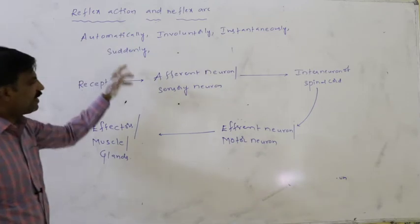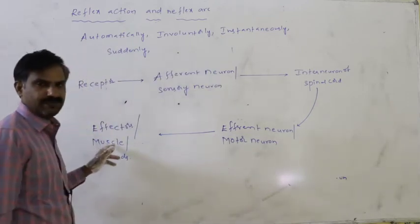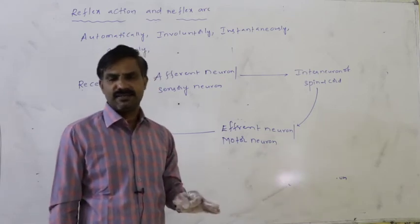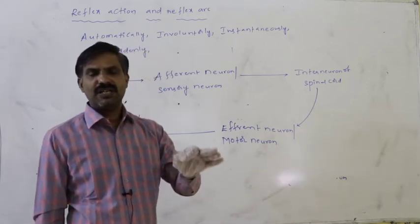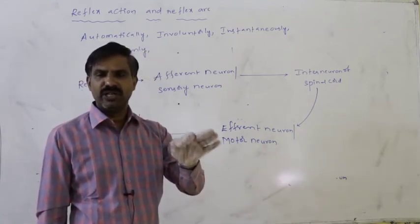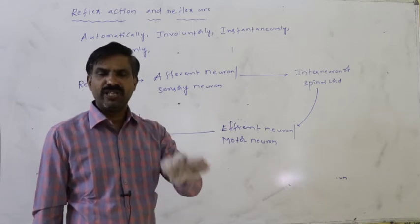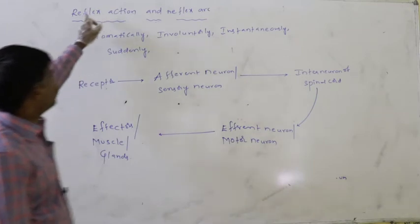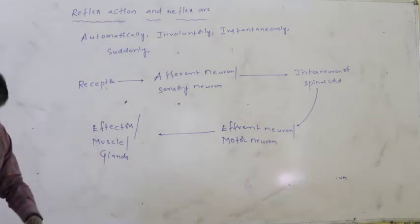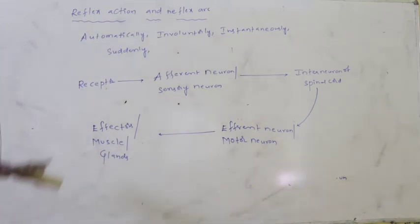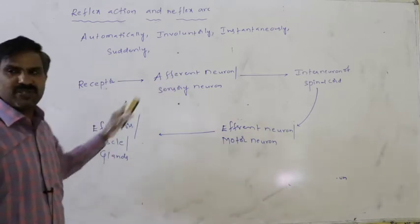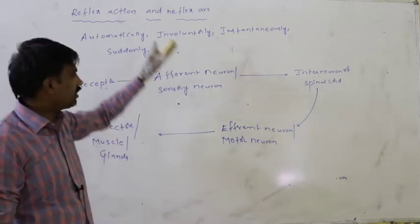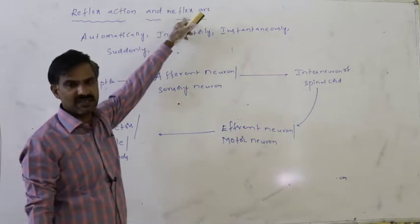This is the reflex arc. Such sudden actions evoked in our body to protect from the effect of danger are said to be reflex actions. The route through which nerve information is conducted to finally evoke the response is said to be the reflex arc.